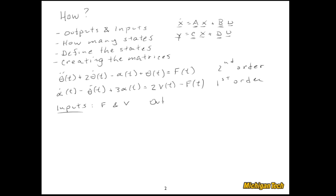Also from our understanding of the system, we can define the outputs. Typically those are things you actually measure — you have sensors measuring temperature, speed, position, voltage, current, etc. In this particular example, our outputs are going to be theta and alpha minus one-half V. Notice that alpha is one of the variables in the differential equation, while V is an input — a somewhat unusual output quantity that allows us to fully exercise the A, B, C, and D matrices.